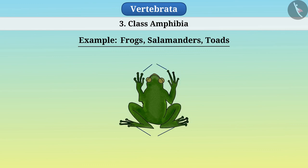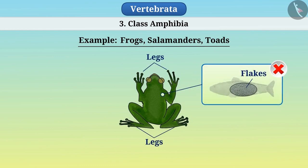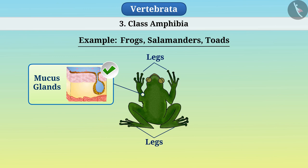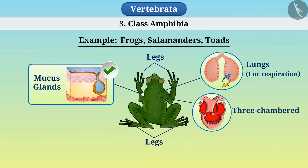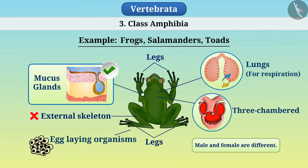They have two pairs of legs. They do not have fish-like scales on their skin, but mucus glands are found on their skin. They contain gills or lungs for respiration and their heart is three-chambered. They lack an external skeleton. Male and female are different. They are egg-laying organisms, i.e., oviparous.